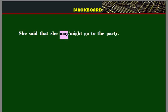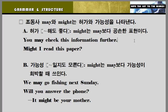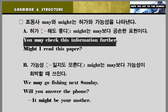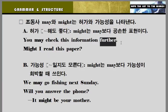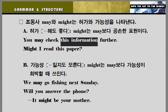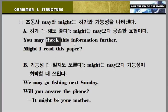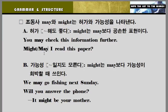조동사 'may'와 'might'는 허가와 가능성을 나타냅니다. 허가를 나타낼 때, 'might'는 'may'보다 좀 더 공손한 표현이 됩니다. 예: 'You may track this information further.' — 이 정보를 좀 더 자세히 점검해도 좋다. 'Might I read this paper?' — 제가 이 서류를 읽어도 괜찮을까요? 이때 'might'는 'may'를 써도 괜찮지만 좀 더 공손한 표현을 나타냅니다. 가능성을 나타낼 때, 'might'는 'may'보다 가능성이 희박할 때 쓰입니다.